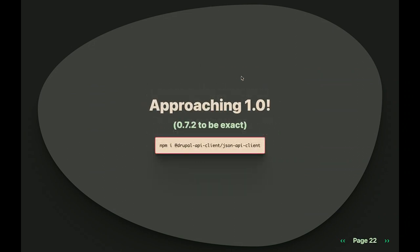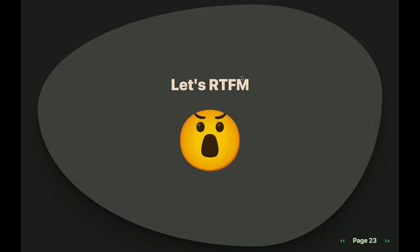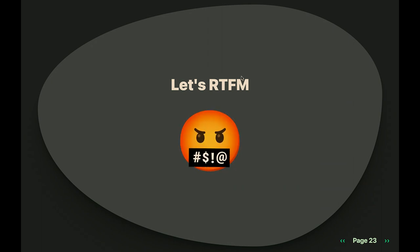Since then we've just kept working on our 1.0 scope, and we're very, very close. We'll be at Contrib Day on Friday, so if you're looking to help out there are some last things we're trying to wrap up. We've had a number of releases — we're at 0.7.2 so far — and our JSON API client is something you can install on NPM right now.